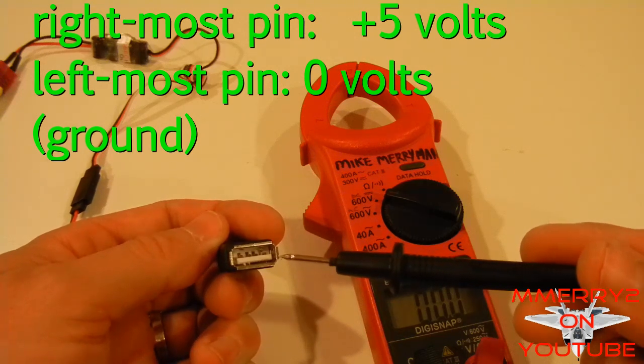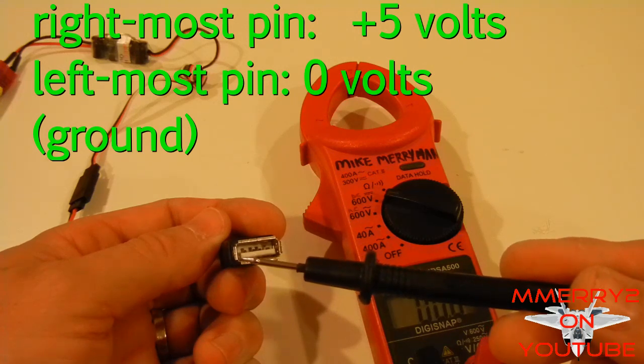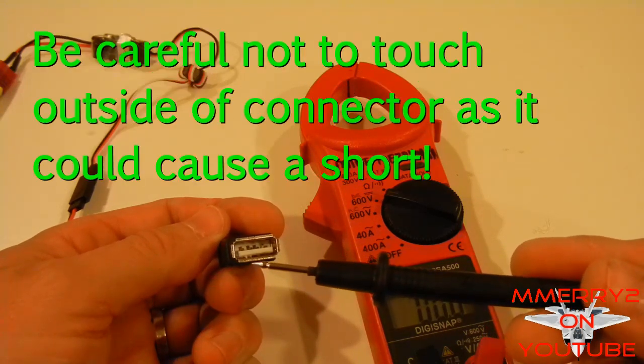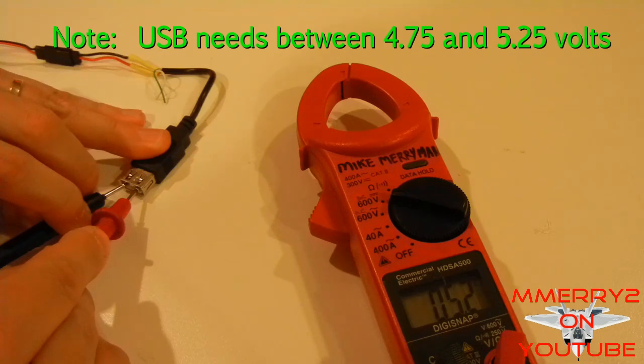What you're going to want to do is take your multimeter and you're going to check two pins on your USB female connector. On the right-most pin, you should have plus 5 volts. And on the left-most pin, you should have your ground. So, we should read a positive 5 volts once we have this hooked together. Okay guys, so you can see I have it hooked up there and you can see 5.2 volts.